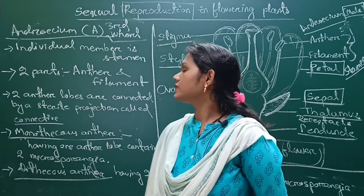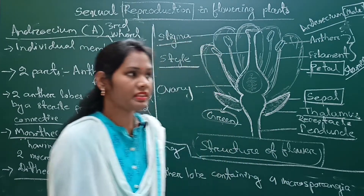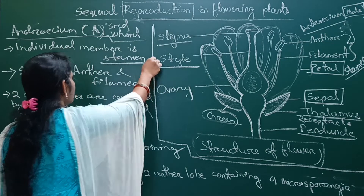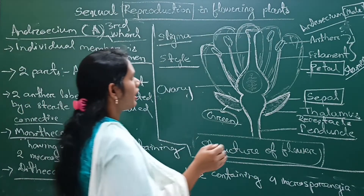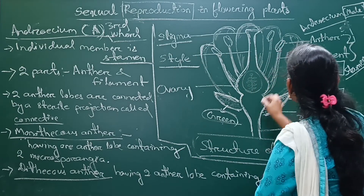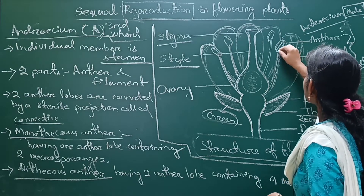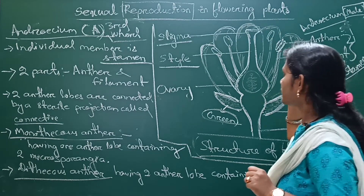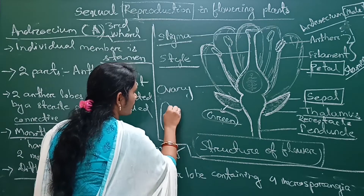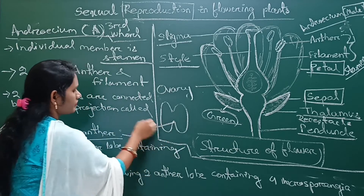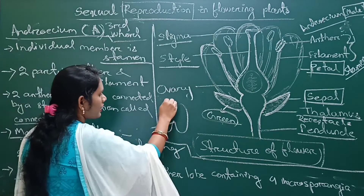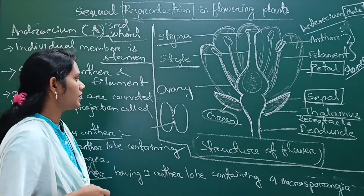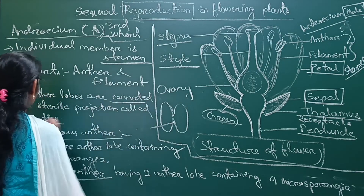Now let us discuss the third whorl — the androecium, symbolically represented as 'A'. Its individual member is called stamen, which consists of anther and filament. As you can see in the picture, there are two anther lobes normally in a flower, and these two anther lobes are connected by a sterile projection called the connective.